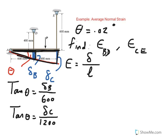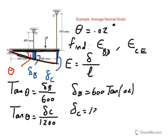So we can go ahead and calculate delta B and delta C. So delta B would be 600 times tangent of this small angle, 0.02, and similarly delta C would be 1200 times the same tangent of 0.02. So you could see that obviously delta C is going to be twice delta B because you have 1200 versus 600.